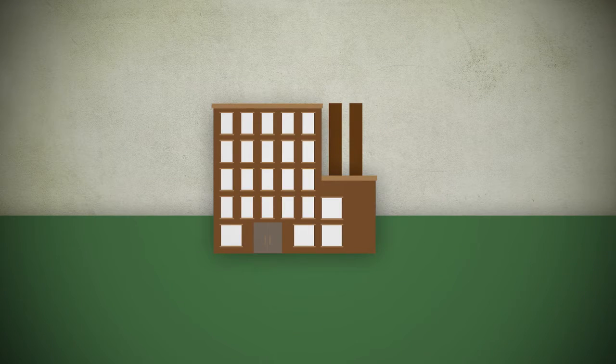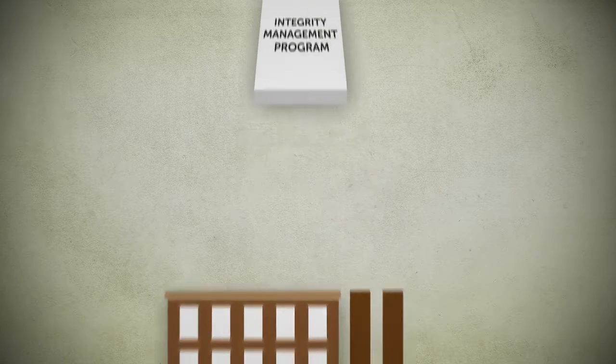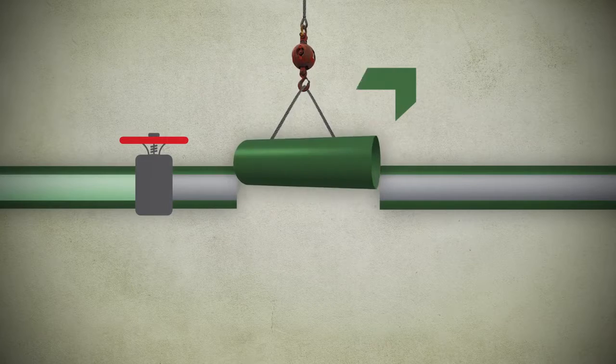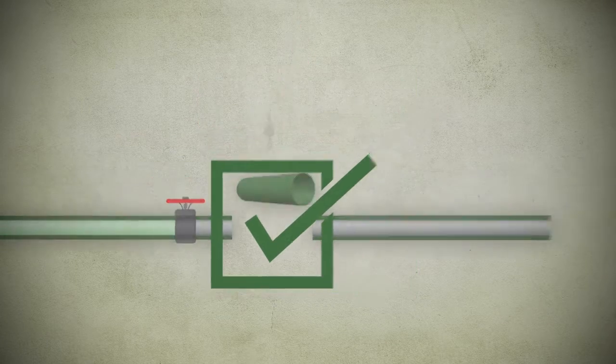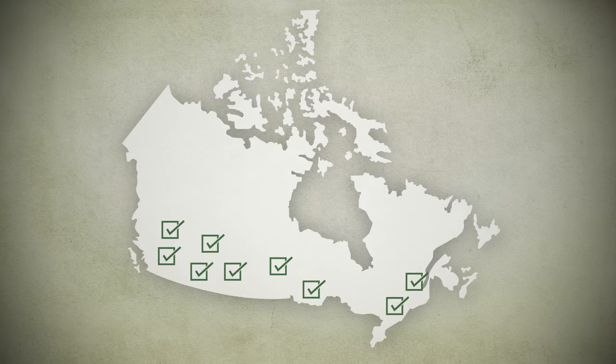At the NEB, we require companies to have programs for maintaining the safety of their pipelines. And we audit the programs, both their content and how they're carried out. These activities play an integral role in how we require companies to ensure safety and protect the environment.